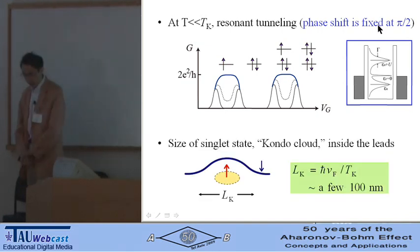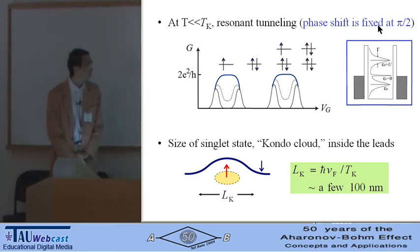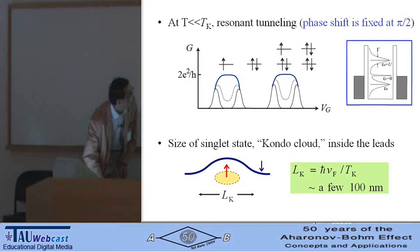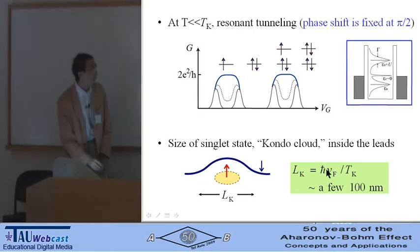The size of the singlet state, so-called Kondo cloud, is given by this equation: Fermi velocity divided by Kondo temperature. So it's very large, a few hundred nanometers inside the lead.